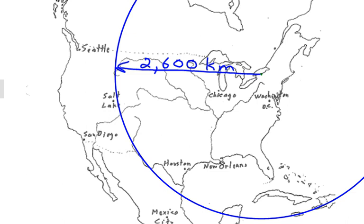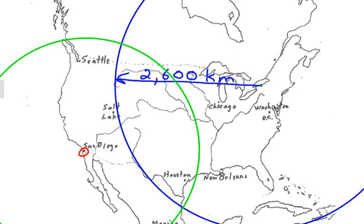The next thing we're going to do is call up some friends elsewhere and see if they can draw a circle as well. We call our friends in San Diego and ask about their seismograph station. They say their time difference was about 3 minutes and 20 seconds, and they calculated the distance to be 2,100 kilometers away. So we draw a circle around San Diego that is 2,100 kilometers in radius. Now we know the earthquake has to be somewhere on the green line and also somewhere on the blue line, so it's going to be at one of the two intersection points.